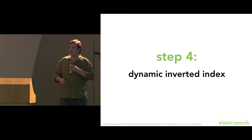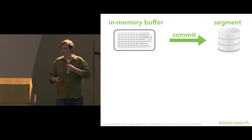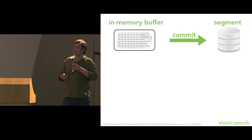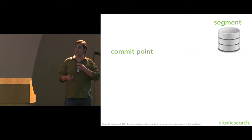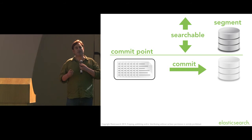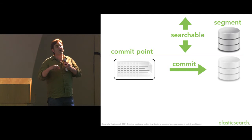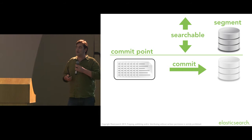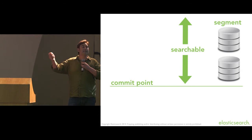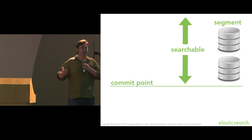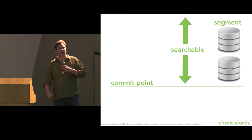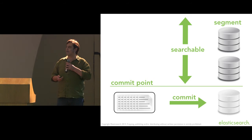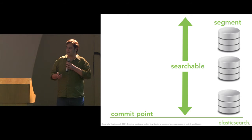In Lucene, you start out with an in-memory buffer. Gradually you index documents, they get added to the buffer, and then we commit. That commit writes a segment to disk and writes a commit point — from then on, that segment is searchable. A segment is an inverted index — a standalone inverted index by itself. We continue adding documents, commit again, write a new segment and commit point, and we can now search across both segments sequentially. Collect the results together, and that gives you the result of your query.